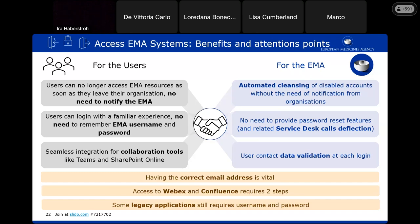Some attention points: having the correct email address in our system is now vital — if you change it you need to contact us. We have two systems, Webex and Confluence, where there is a two-step process. And as stated, this applies only to systems using modern authentication — for systems using other protocols we still rely on username and password. We are working to make the list of those remaining systems very slim.